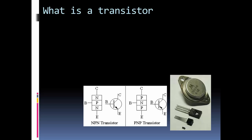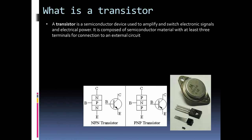A transistor is a semiconductor device used to amplify and switch electronic signals and electrical power. It is composed of semiconductor materials with at least three terminals: the base, the emitter, and the collector.